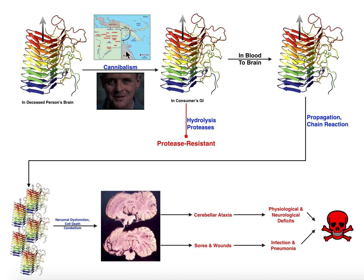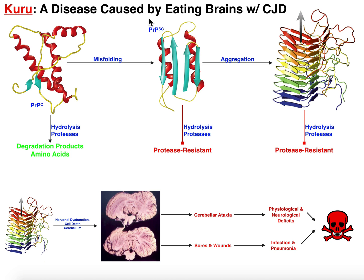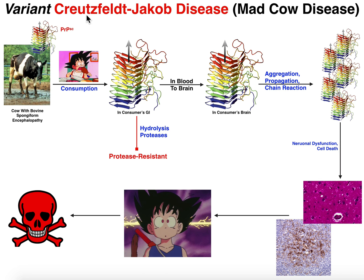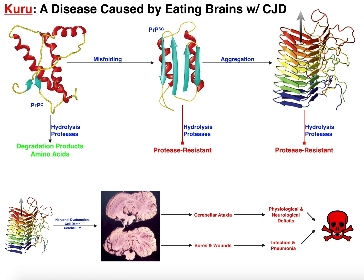So that's Kuru — a disease caused by eating the brains of someone who had classical Creutzfeldt-Jakob disease. The initial person had classical CJD, and subsequent generations had Kuru. In the next video we're going to see another form called variant Creutzfeldt-Jakob disease, which is the human form of mad cow disease, and it will be very similar in essence to Kuru, except the culprit will be the prion protein in cows. I hope you learned something — please like this video and subscribe for future videos.